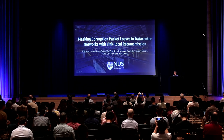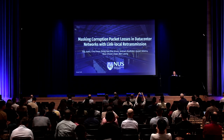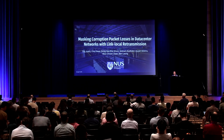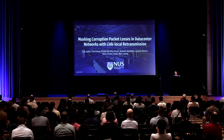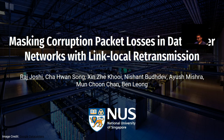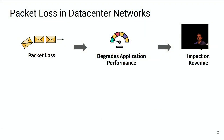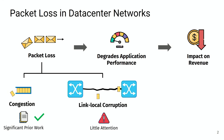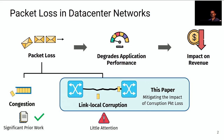Morning everyone. Today I'll be talking about masking corruption packet losses in data center networks using link-local retransmission. This is joint work with collaborators Chawan, Shinzo, Nishant, Ayush, and advisors Manchun and Ben. Before I start — this talk is not about congestion control, it's more about network infrastructure reliability. Packet loss in data center networks is an important problem — it degrades application performance and has a direct impact on revenue. Packet loss is caused by congestion as well as link-local corruption, which occurs on optical links in large warehouse-scale data centers. In this paper, we focus on how to mitigate the impact of corruption packet loss.